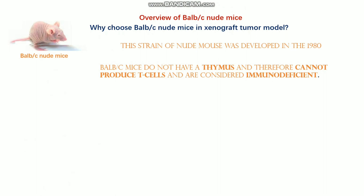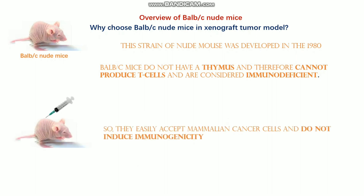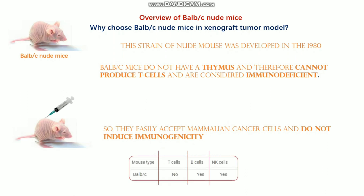Because T cells play a major role in immune functions, the lack of a thymus makes these mice immunodeficient. This is why when you inject cancer cells, these mice do not induce any kind of immunogenicity, so they can easily accept the cancer cells and a tumor can form.